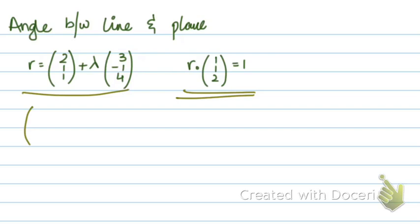You dot the direction vector, that's (3, -1, 4), with the normal (1, 1, 2). This equals the modulus of the direction vector: √(3² + 1² + 4²) = √(9 + 1 + 16) = √26, times the modulus of the normal: √(1² + 1² + 2²) = √6, times cos alpha.